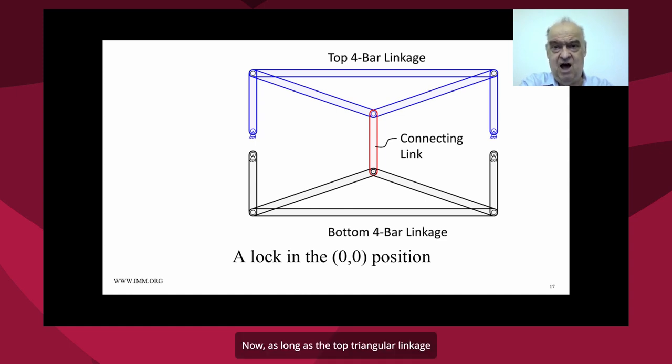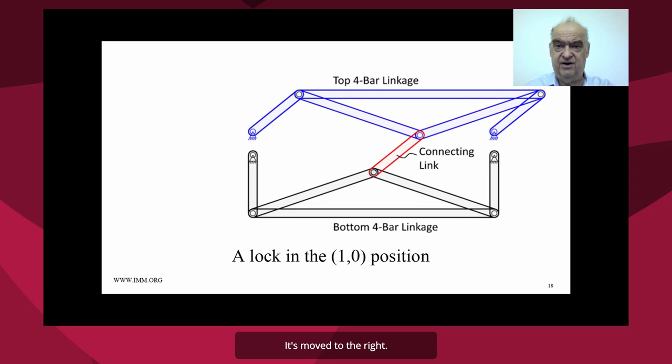Now, as long as the top triangular linkage is able to move back and forth freely, then it is unconstrained and can move to the right. And we'll illustrate that. There it is. It's moved to the right. And what's interesting is once you do that, the bottom triangular linkage is now locked in place.